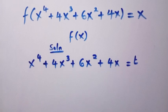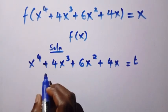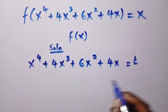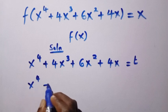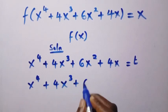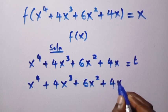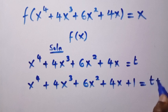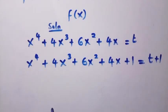What I will do here is add 1 to both sides. I will tell you the reason why. So it becomes x^4 + 4x^3 + 6x^2 + 4x + 1 = t + 1.